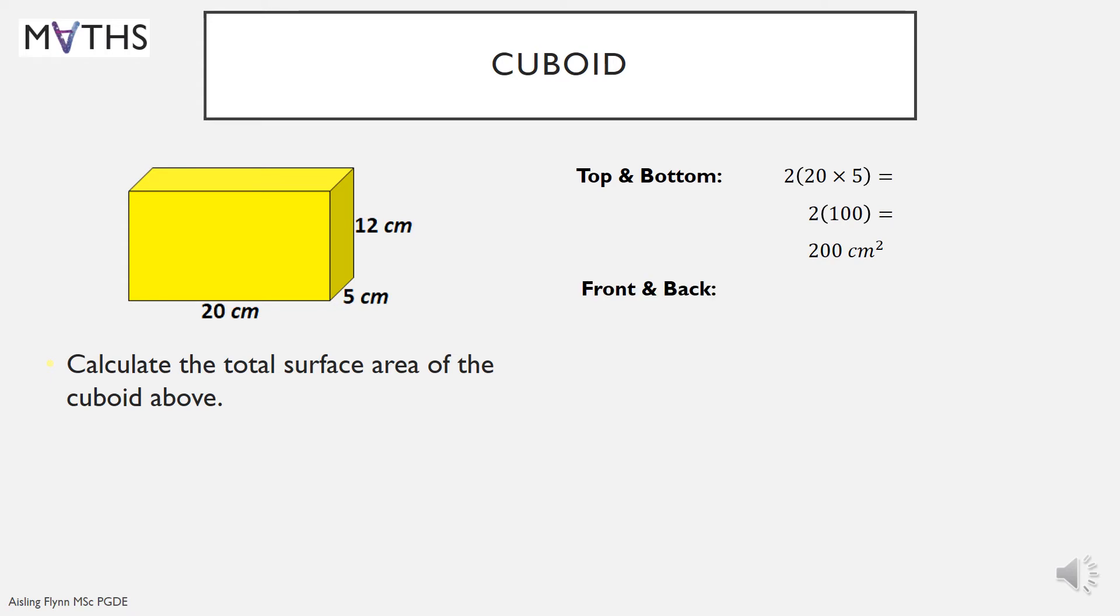Front and the back. So the front is that large side. It's 20 times 12. And so is the back. So two times that. We get 480. And then left and right, that's the smaller side, are 12 times five. And we have two of them. So two times 12 times five. And we get 120. So the total surface area will be what you get when you add those three individual answers. We get 800 centimeters squared.